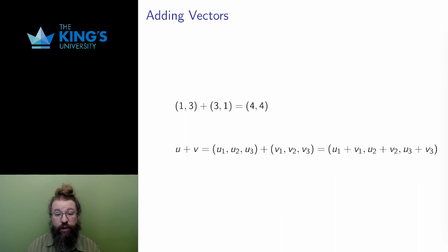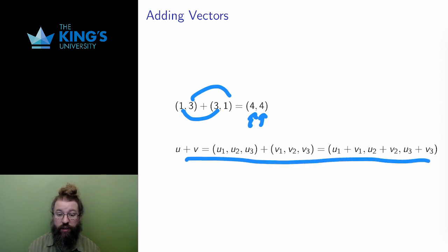Vectors can be added together component-wise. That is, the first entries are added together, the second entries are added together, and the third entries are added together. On the screen, I've done an example in R2, and given the general case in R3.